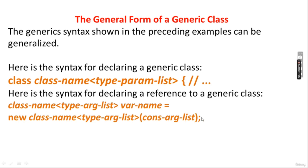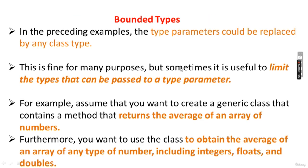Now we will see bounded types. Type parameters can be replaced by any class type, but sometimes it is useful to limit the types that can be passed to a type parameter. For example, assume you want to create a generic class containing a method that returns the average of an array of numbers — and you want to use the class to obtain the average for any numeric type including Integer, Float, and Double.